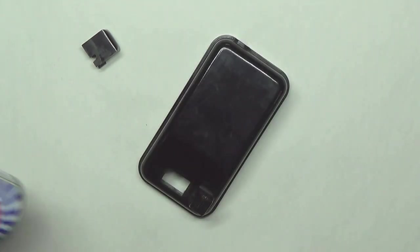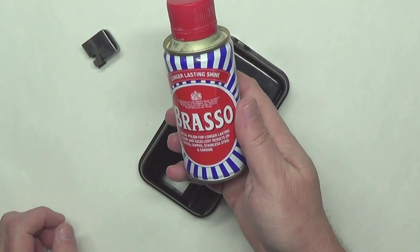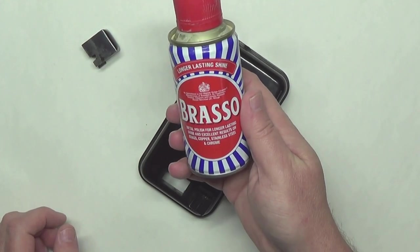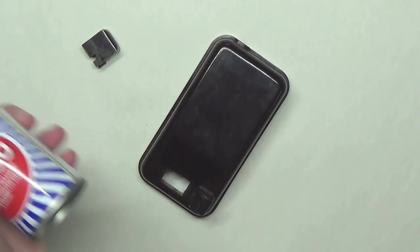Instead, I'm going to polish it with Brasso liquid. Brasso is a metal polish, but it's perfect for hard plastics like Bakelite.